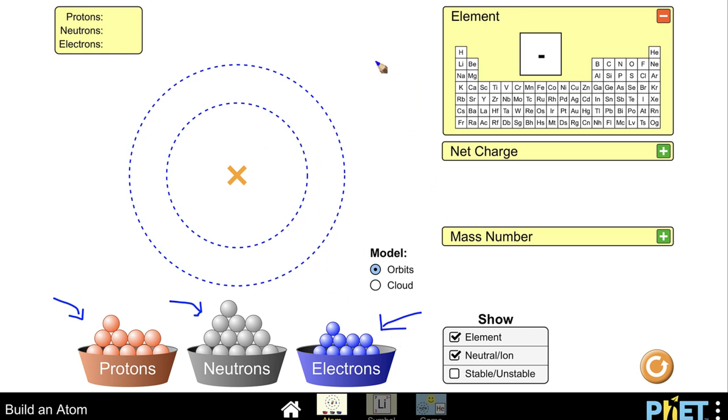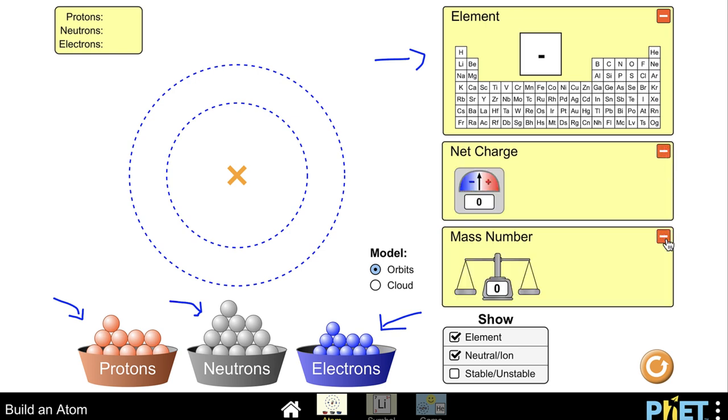We have the periodic table up to the left hand side here that we can look at and that shows the different elements and then we can look at things like net charge if it is going to be an ion and the mass number of the atoms. We can open those up if you want.